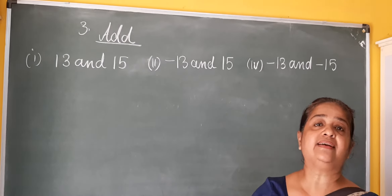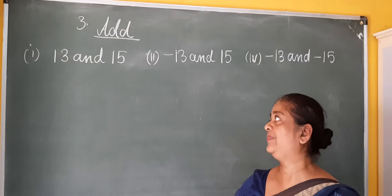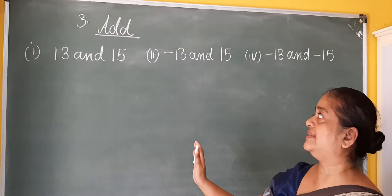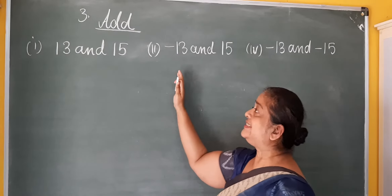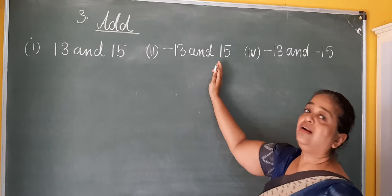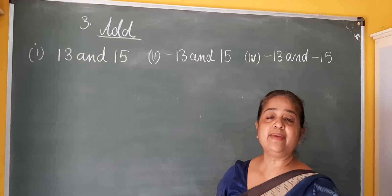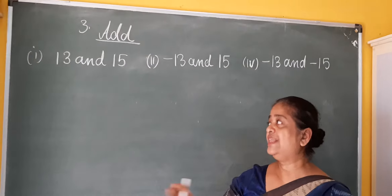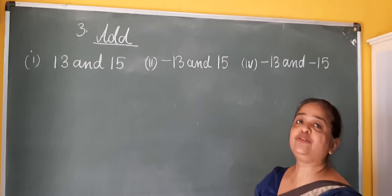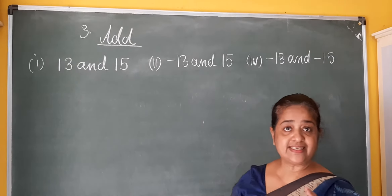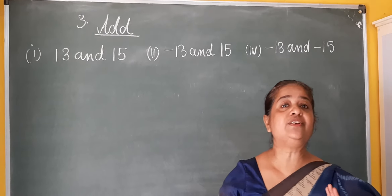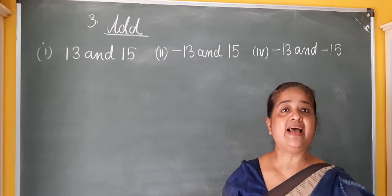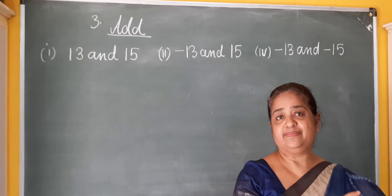I want to present it to you in the form of a game. Now in our game there are two teams. The positive integers are all on one team and negative integers, they constitute the opposite team. So there is a match between two teams. You have to understand the positive team and the negative team.